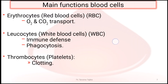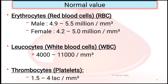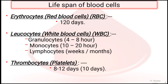Thrombocytes are responsible for clotting. The normal values of formed elements are: erythrocytes — 4.9 to 5.5 million per cubic millimeter in males, 4.2 to 5 million in females; leukocytes — 4,000 to 11,000 per cubic millimeter; thrombocytes — 1.5 to 4 lakh per cubic millimeter. Lifespan: erythrocytes live 120 days; granulocytes 4 to 8 hours; monocytes 10 to 20 hours; lymphocytes weeks or months.